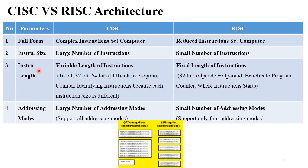The next point is instruction length. CISC architecture supports variable length instructions, meaning it supports 16-bit, 32-bit, and 64-bit operating systems. But in Reduced Instruction Set Computer, it supports fixed length instructions — only 32-bit, where the 32 bits include opcode and operand. This is beneficial for the program counter; it is easy for the program counter to identify where instructions start. But in CISC architecture, with different bit lengths, it is very difficult for the program counter to identify where one instruction ends and the next begins.